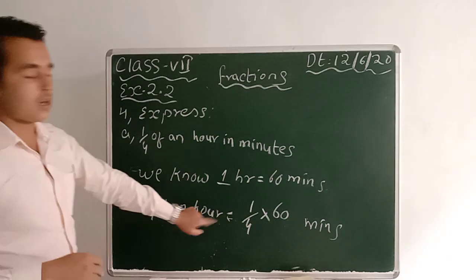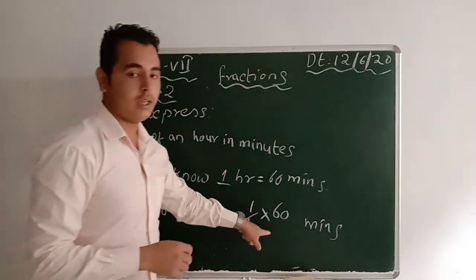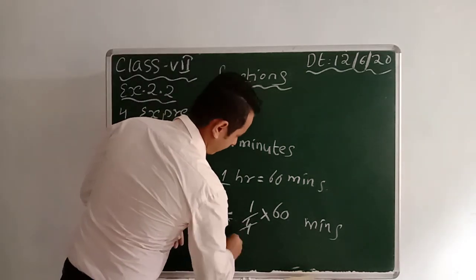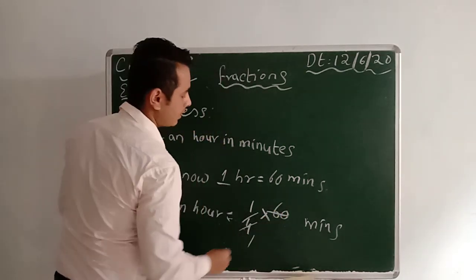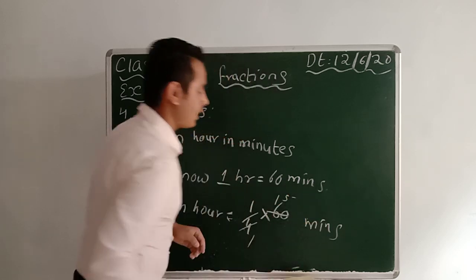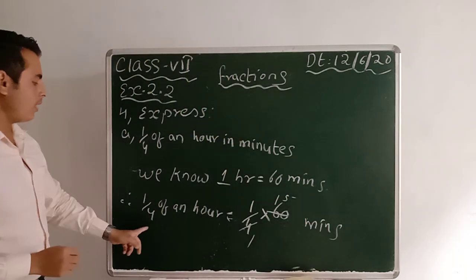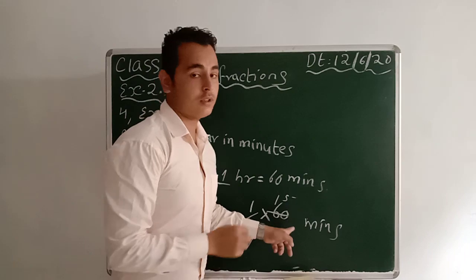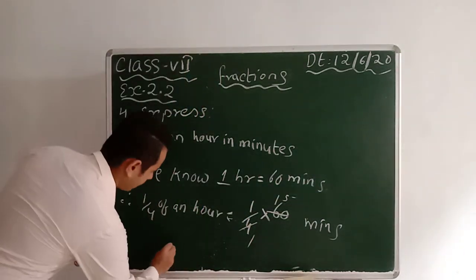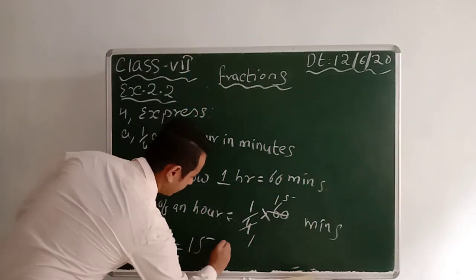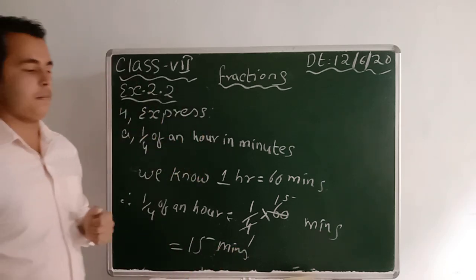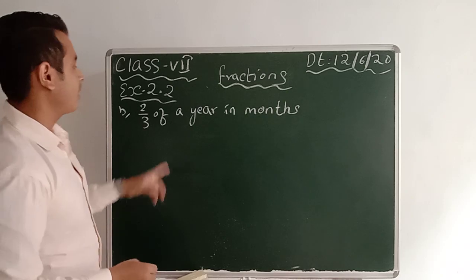So 1/4 of an hour means 1/4 into 60 minutes. Cut 4 and 60: 4 ones are 4, 4 fifteens are 60. That means 1/4 of an hour equals 15 minutes.